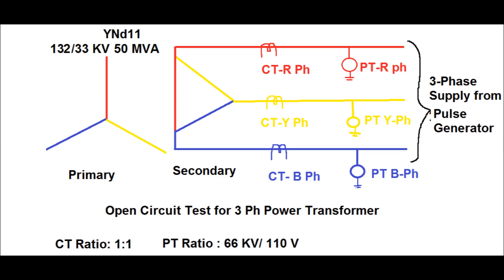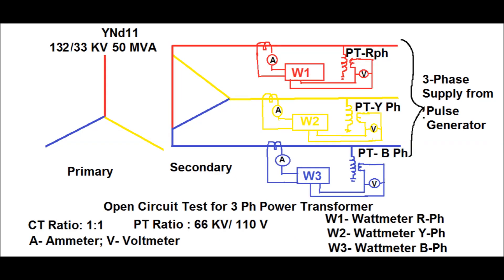In the arrangement shown in this diagram, the PT ratio is 66 kV to 100 V, that is a ratio of 600. The CT ratio is 1:1 since the CT current will be very small, which is why the CT ratio is used as 1:1. The three-phase supply given from the pulse generator is of the order of 33 kV.